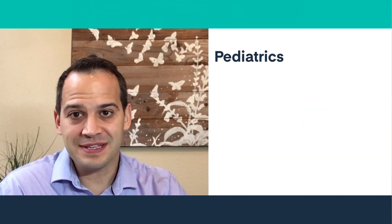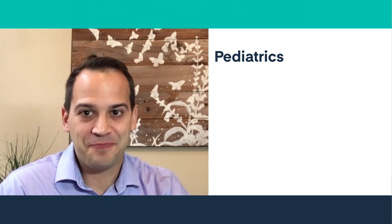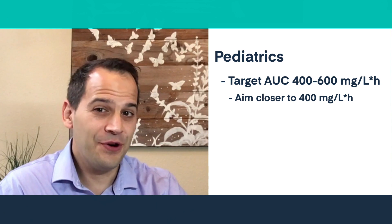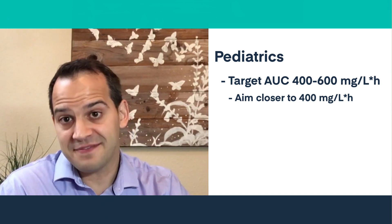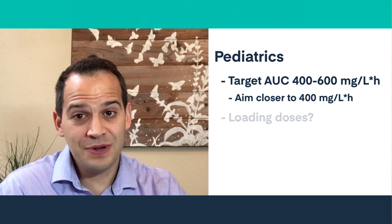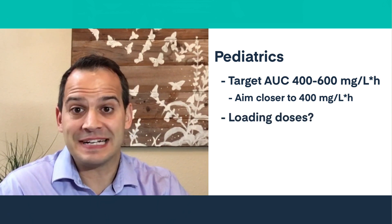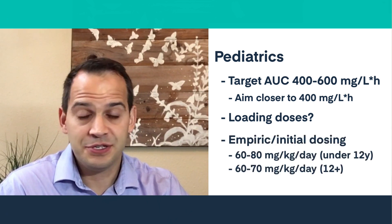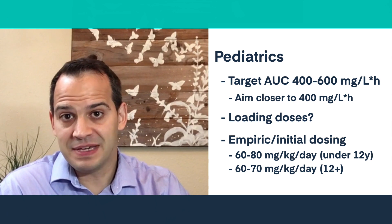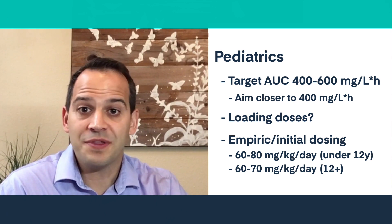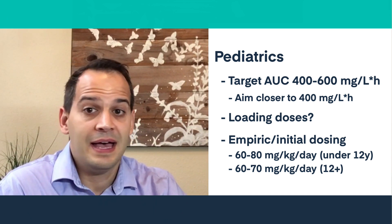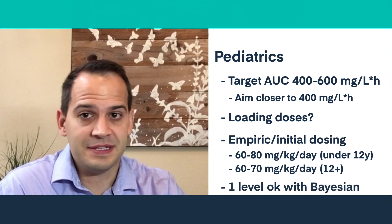With pediatrics, the sentiment is largely the same recommendations but with less evidence. The AUC target is the same, but the authors advise targeting closer to the 400 end of the 400 to 600 range due to a lack of evidence for higher AUCs in kids. For loading doses, there's just a lack of evidence. They suggest empiric dosing of 60 to 80 mg per kg per day in children and 60 to 70 mg per kg per day in adolescents 12 years and up, with a maximum initial dose of 3,600 mg per day, though you will often need to go more than 3 grams. They support a one-level sampling strategy if you're using Bayesian software.